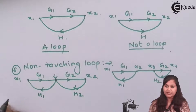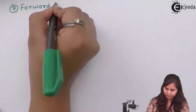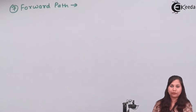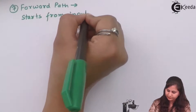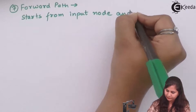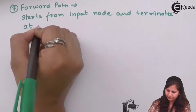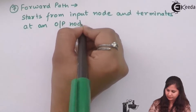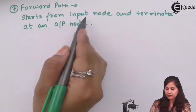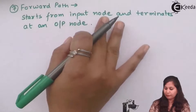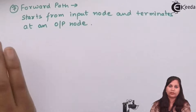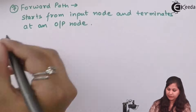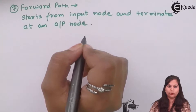Now the next term is the forward path. It is a path which originates from an input node and terminates at an output node. Also, when traversing this path from input node to output node, no node has to be encountered twice - it is not going to cross any node more than once.